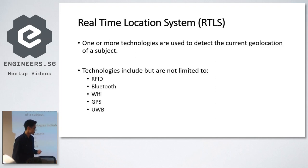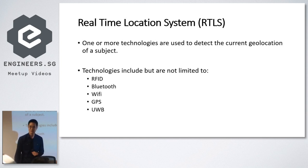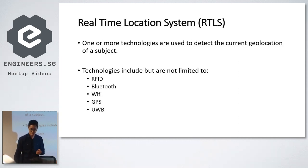I want to explain what RTLS is, because in tracking systems you will see this term. It stands for Real-Time Location Systems. They can include one or more technologies such as Wi-Fi, Bluetooth, UWB, or GPS.